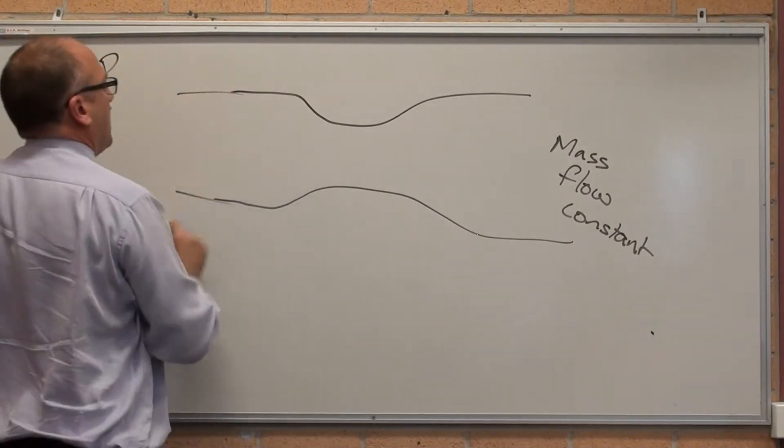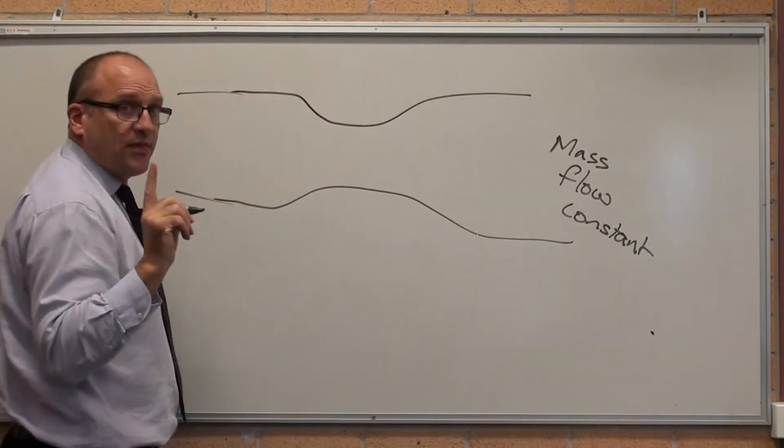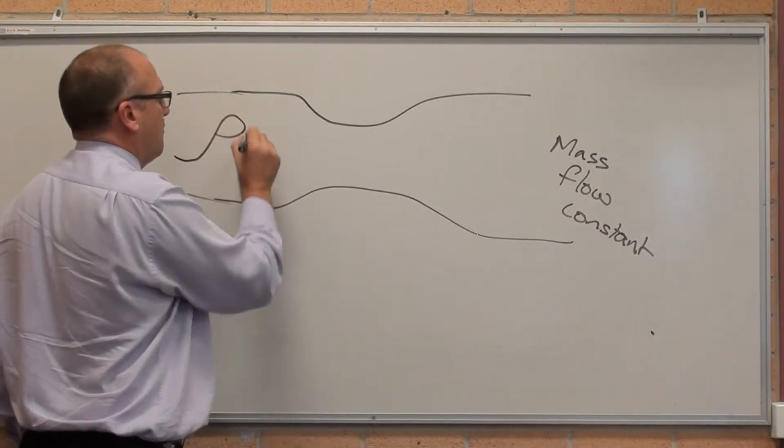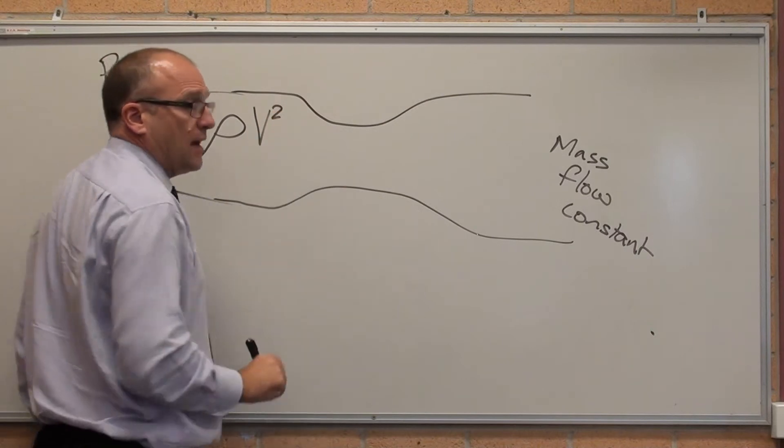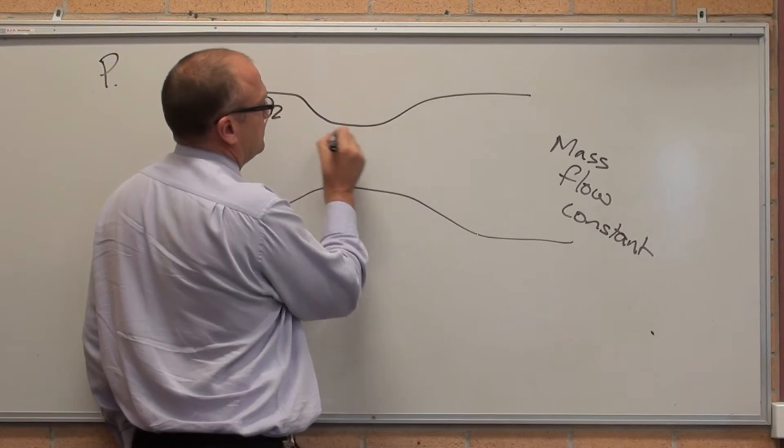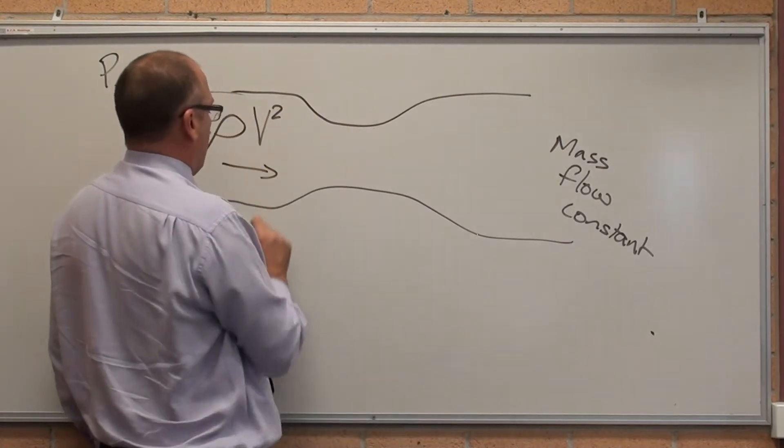Outside there's a static pressure. Inside there's what they call dynamic pressure, which is the density, rho, times the velocity squared. In here, let's say that's going, I don't know, that quick.